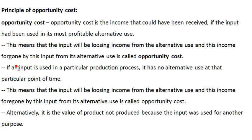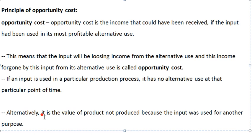The real fact in this scenario is: if any input is already used in a particular production process, then it has no alternative use at that particular point of time, and this means the input will be losing income from its alternative use. Opportunity cost is the value of product not produced because the input was used for another purpose, or we can say income to be received from the alternative uses of that particular resource is sacrificed by the use of this resource in another activity.